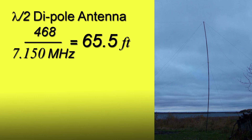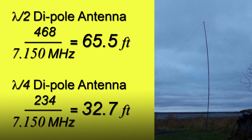Let's say you're putting up a 40-meter dipole in your backyard. We calculate for 7.150 megahertz: 468 over 7.150 megahertz gives us a half-wave dipole of 65.5 feet. For the quarter-wave, 234 over 7.150 megahertz gives us 32.7 feet.